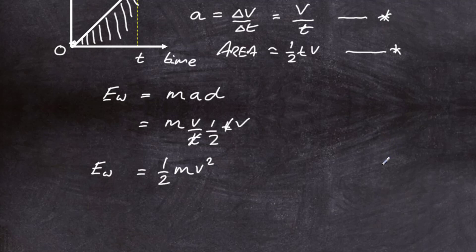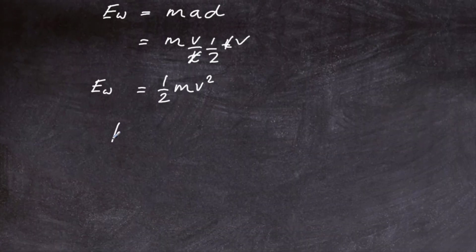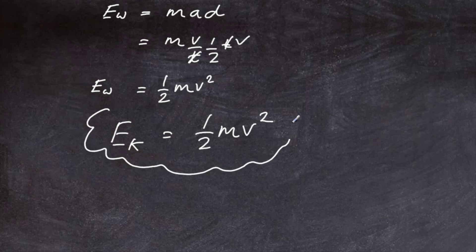So there is the alternative form for the energy transferred: EW equals one half times the mass times V squared. That is the kinetic energy of a moving object. So the kinetic energy EK is equal to one half its mass times the speed squared, and that is the kinetic energy formula.